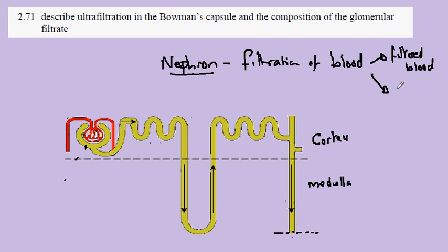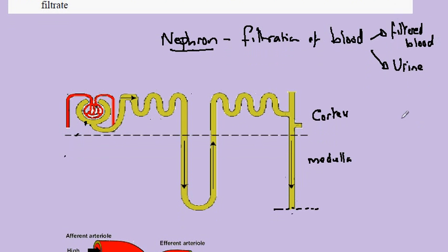And the waste which is known as urine. In our structure here, this is the Bowman's capsule, the nephron which carries out this process.